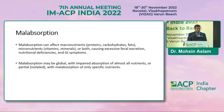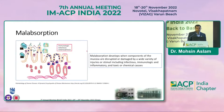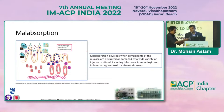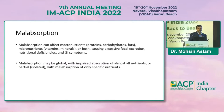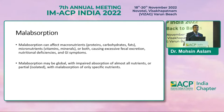Malabsorption develops when the components of the mucosa are disrupted or damaged by a variety of reasons like immunological causes, infections, or toxic and chemical substances. Malabsorption can affect both macronutrient and micronutrient absorption, causing excessive fecal excretion, nutritional deficiencies, and GI symptoms. Malabsorption syndrome may be global, affecting absorption of all components of the diet, or may be isolated to specific nutrients.